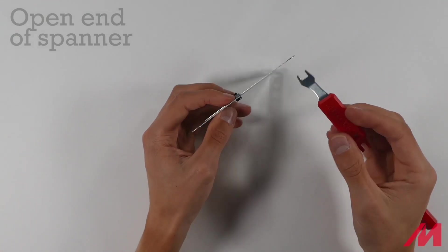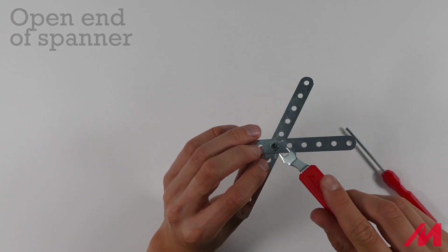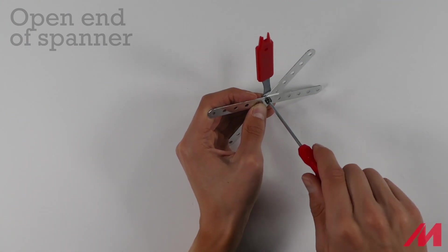Or, if you don't have much space, you can use this side of the spanner which you fit onto the nut. And again, turn to the right.